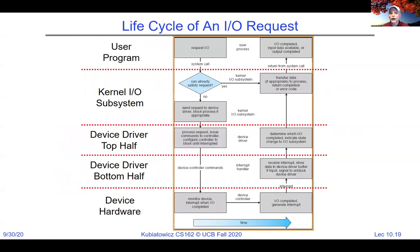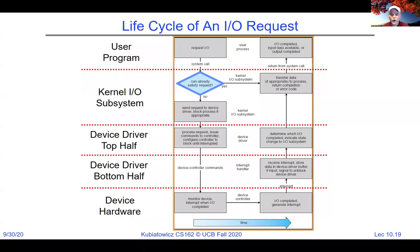Here's an example I/O request flow: the user program requests a read, which crosses into the kernel as a system call. The kernel first asks: can I already satisfy the request? If yes, it immediately copies results into the user's buffer and returns. Why might the kernel immediately satisfy the request? Caching. If you read 13 bytes at a time from a file system and the disk transfers 4K blocks, that whole block goes into a cache, satisfying subsequent reads without hitting the disk.